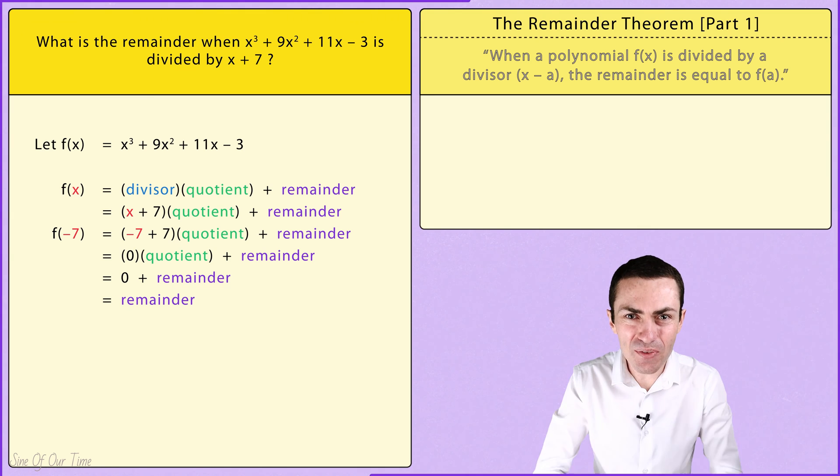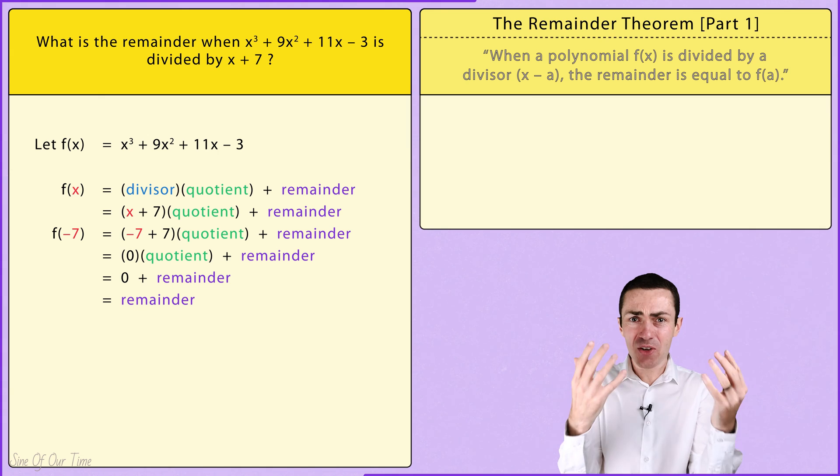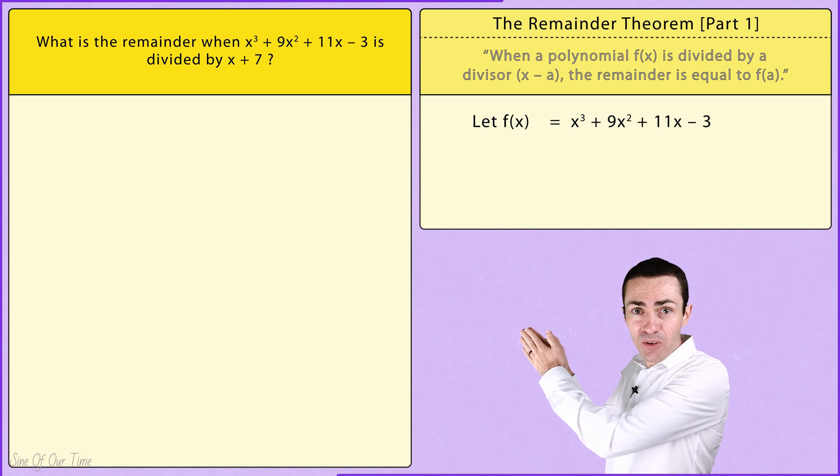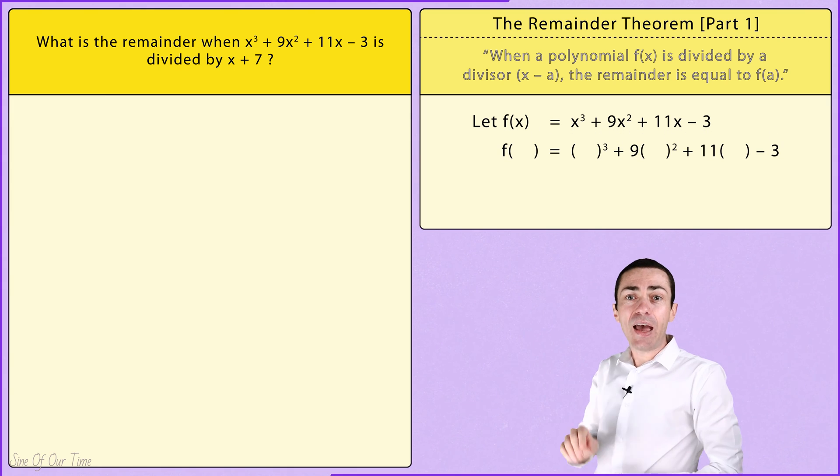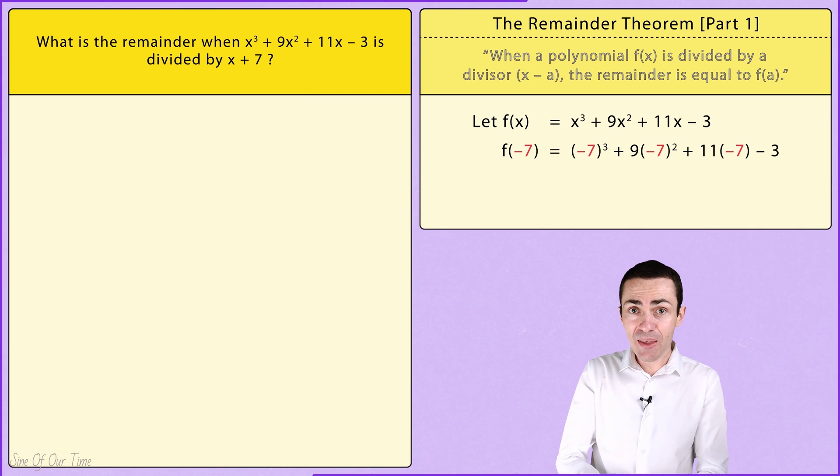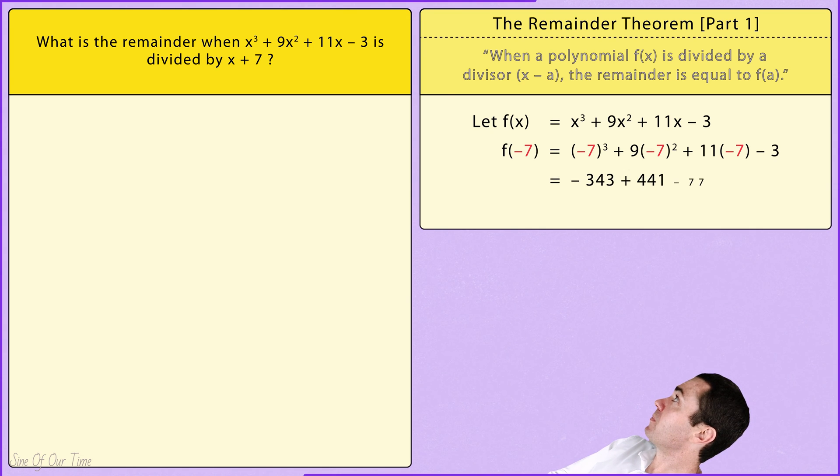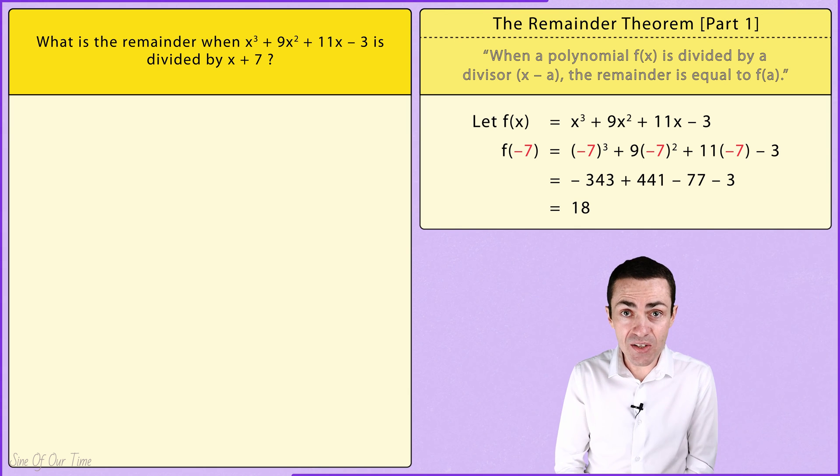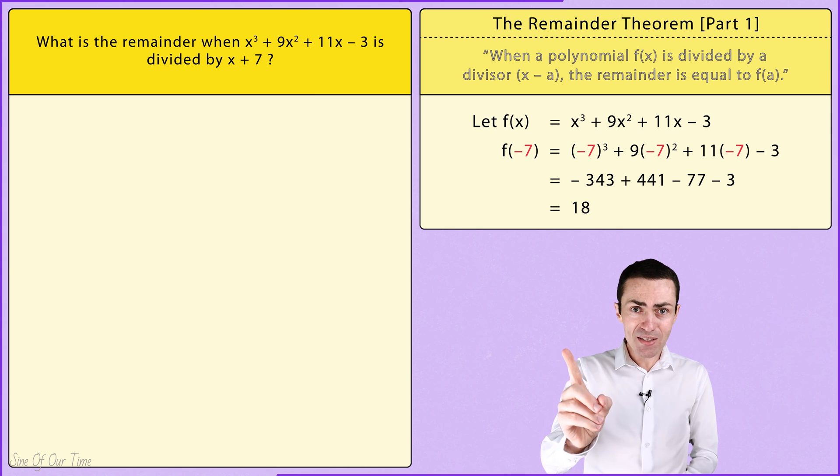Now that's just a whole lot of theory to explain why the remainder theorem works. Here's what we actually need to do when we use the remainder theorem. We take the original polynomial function that we created, and wherever we see an x, we replace it with negative 7. Once we have done that, we simplify. And as we can see, the answer is 18, which according to the remainder theorem should be the remainder.